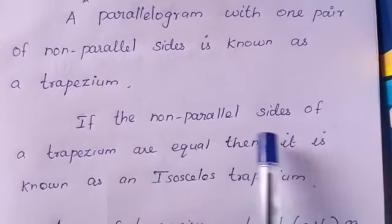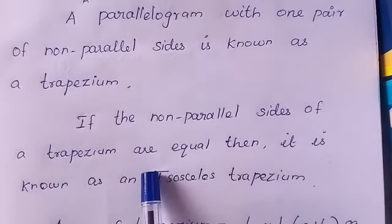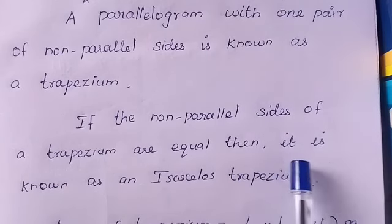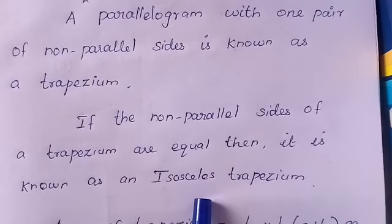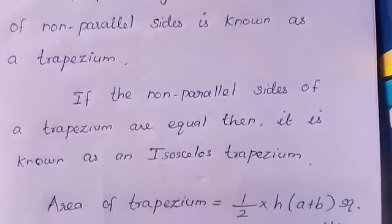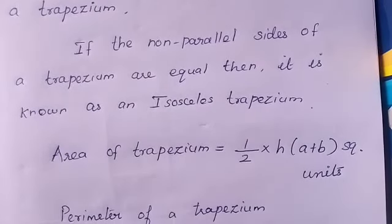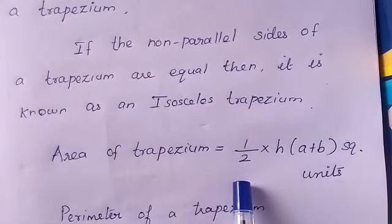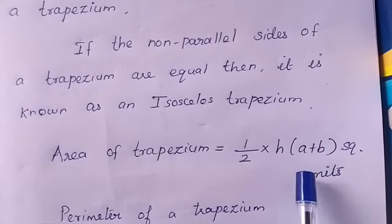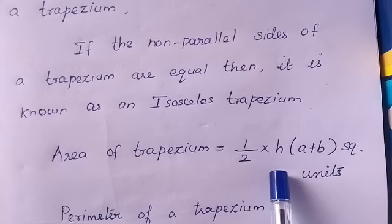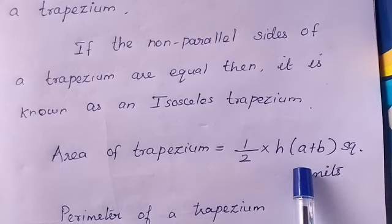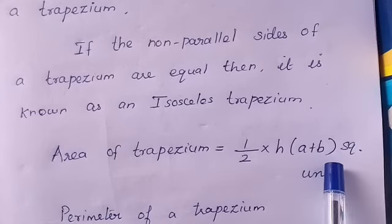If the non-parallel sides of a trapezium are equal, then it is known as an isosceles trapezium. Area of a trapezium equals half × h × (a + b) square units, where h is the distance between the parallel sides and a and b are the lengths of the parallel sides.